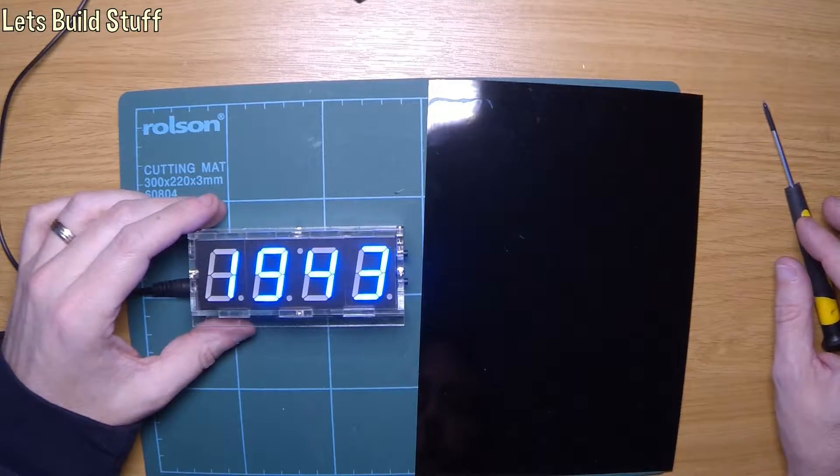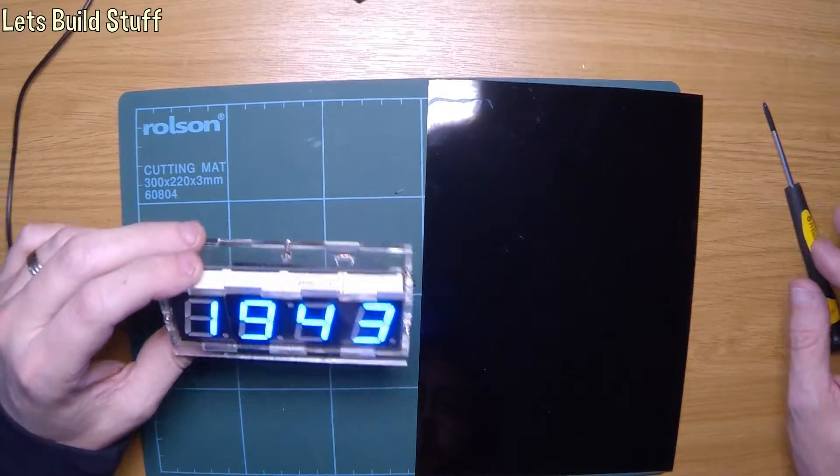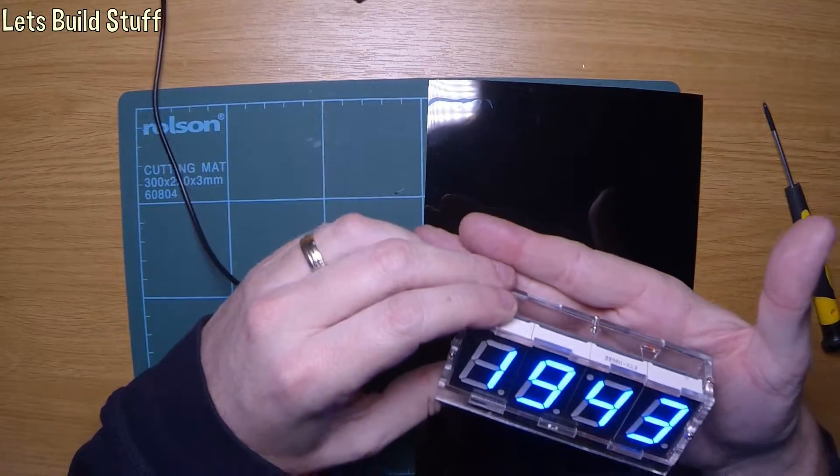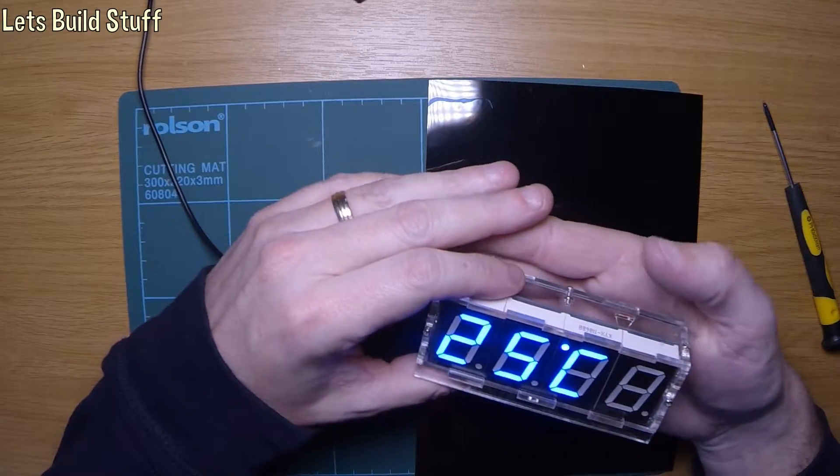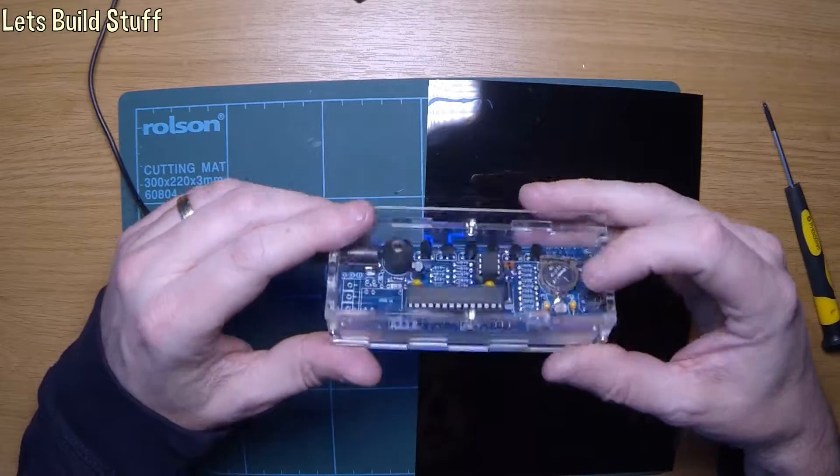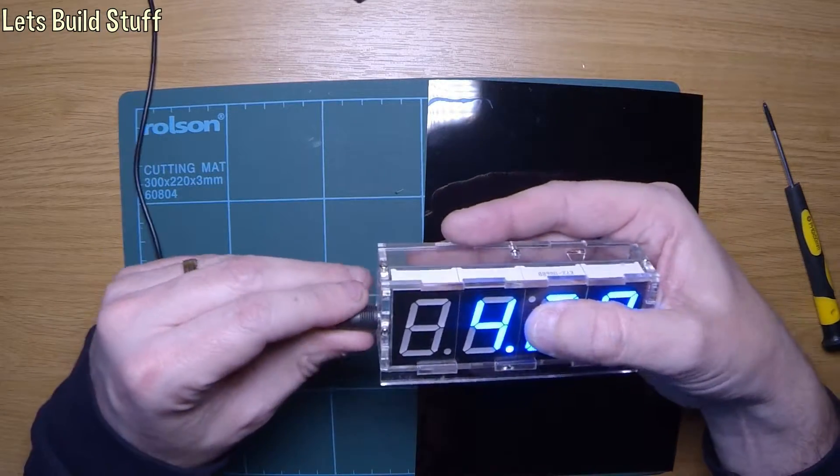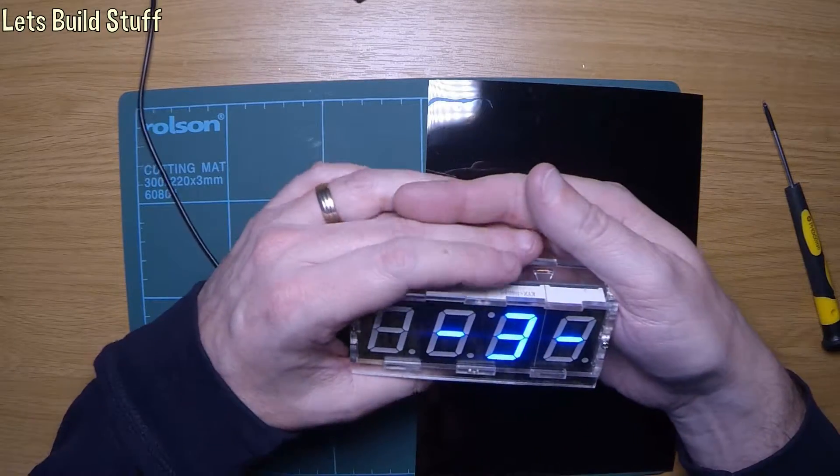Here I've got the clock from Banggood. I've been using it for a few weeks, but it's a bit bright, even at nighttime when there's no light on the light sensor. It dims down a bit - I don't have the power plug in for you there - but it's still too bright at night.